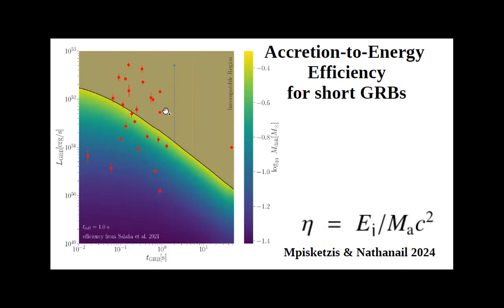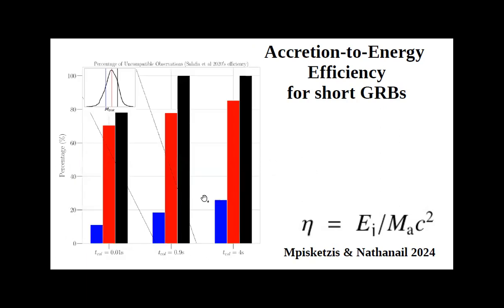The result: in order to produce the same accretion-to-energy efficiency as GW170817, most observed short GRBs would require disk masses above the 0.4 solar mass limit from numerical relativity. Translated into fractions of incompatible events: even taking the lower part of the mass distribution, at least 20% of observed short GRBs cannot be explained by binary neutron star mergers — either they had a different progenitor or a different mechanism is at work.